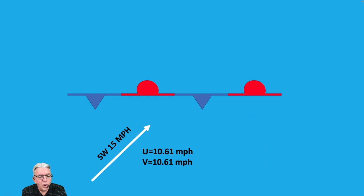Suppose on the warm side we have a southwest wind at 15 miles per hour, and we've already calculated that the U and the V wind components are going to be 10.61 miles per hour apiece.